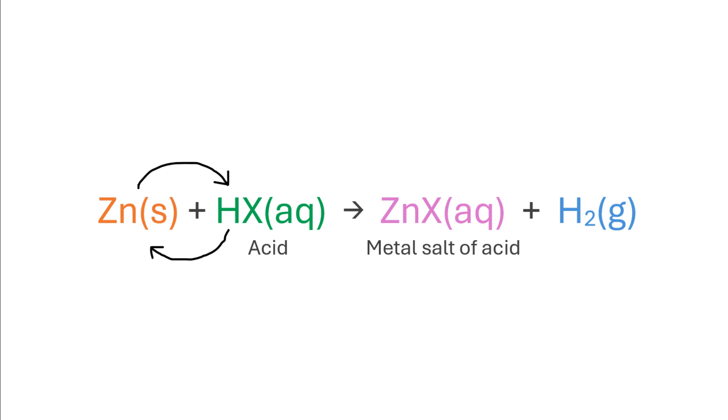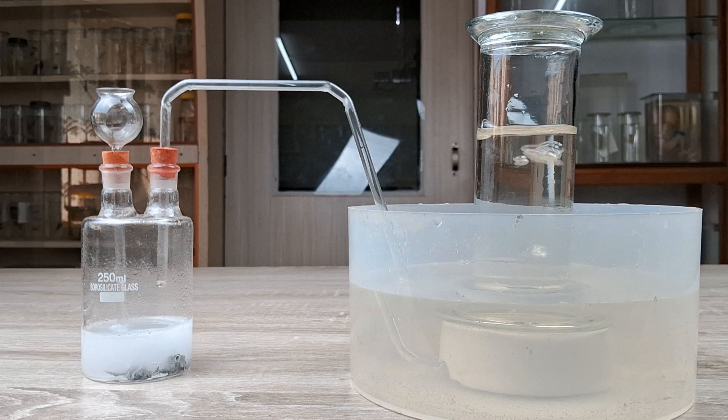Metals react with dilute acids to form the corresponding metal salt along with the release of molecular hydrogen gas. The reaction between zinc and a dilute acid is also one of the most common ways of preparing hydrogen gas on a small scale in the laboratory.